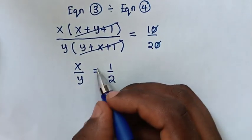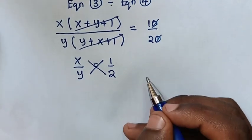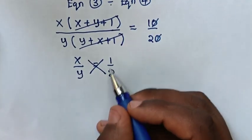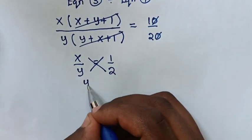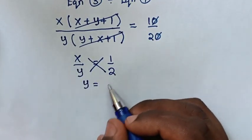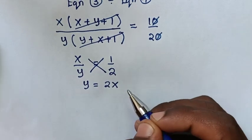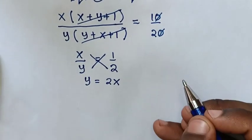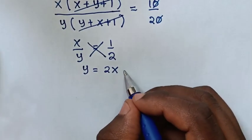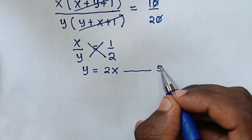Then in the next step we will cross multiply. So y is equal to 2x. We call this equation 5.